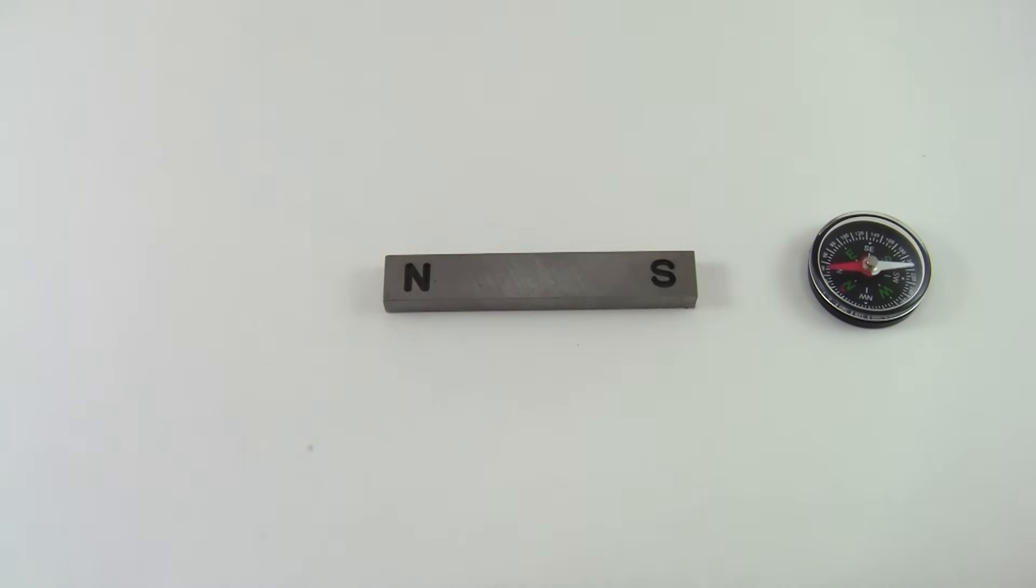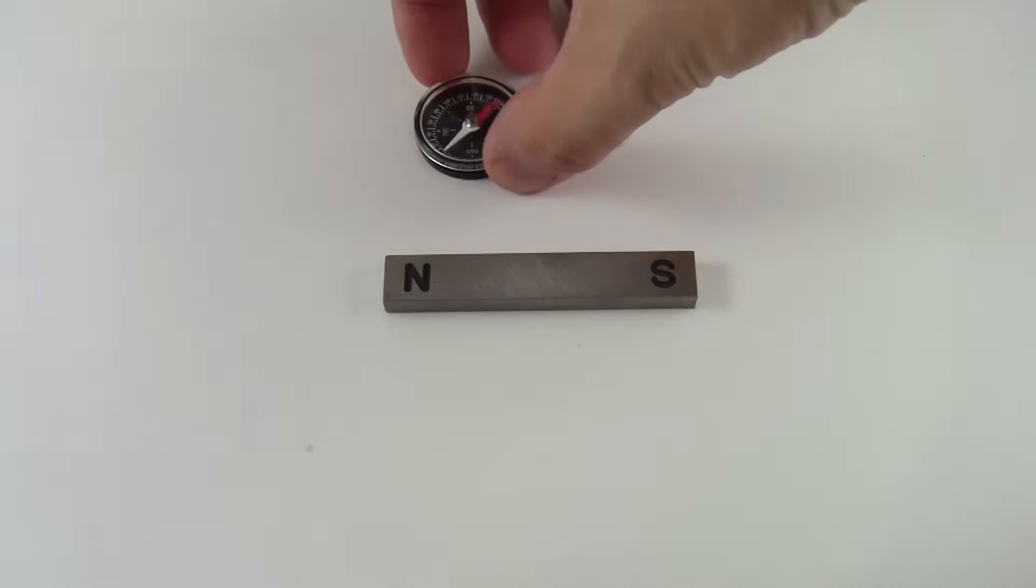You can also take a compass, which is itself a small magnet, and move it around near another magnet, and the needle will point in the direction of the magnetic field.